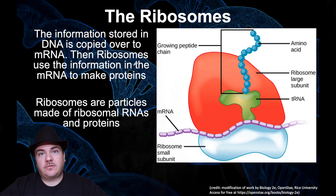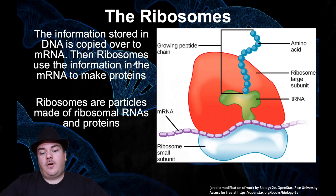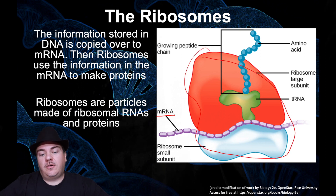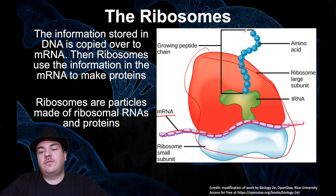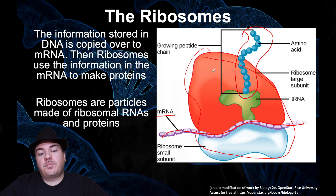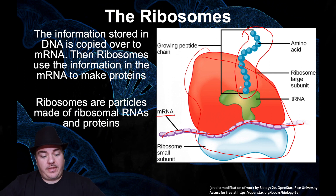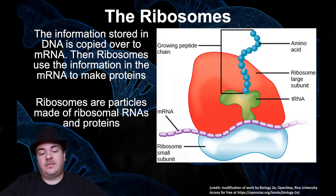DNA stores your genetic information. That DNA is transcribed into mRNA. Then the mRNA goes to the ribosome, and the ribosome reads the information in the mRNA and uses that information to build your protein or polypeptide. So the purpose of the ribosome is to build proteins or polypeptides.